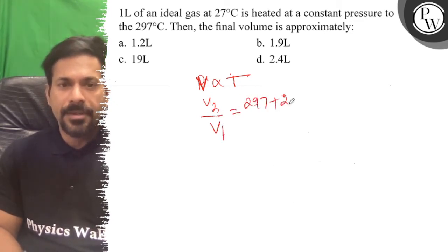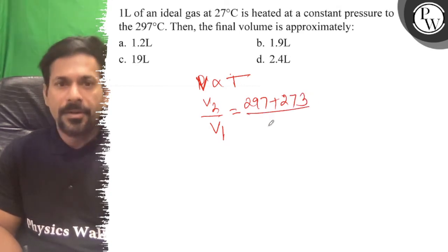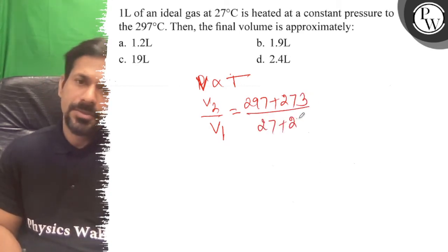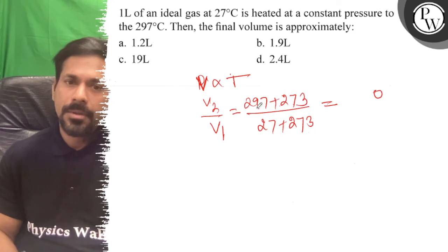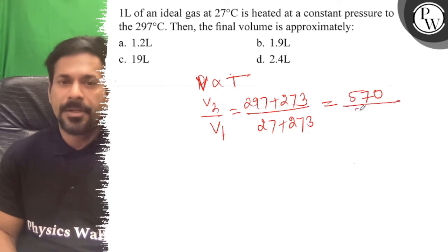Plus 273, divided by T1, which is 27 plus 273. So here we have 570 divided by 300. So V2...